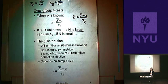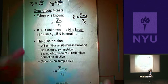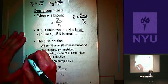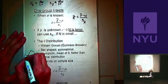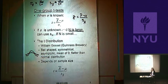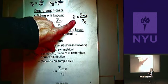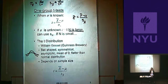The T distribution is similar to a normal distribution — it's still bell-shaped, still asymptotic, and has a mean of zero — but it's flatter than the normal distribution. The shape of this distribution depends on sample size; it's really a family of distributions. As your sample size gets bigger, the T distribution starts to look normal. That's why when you hit about 100, you can go back to using Z.